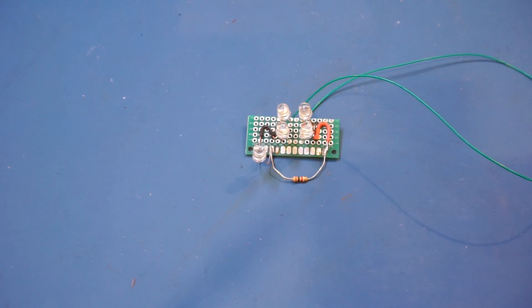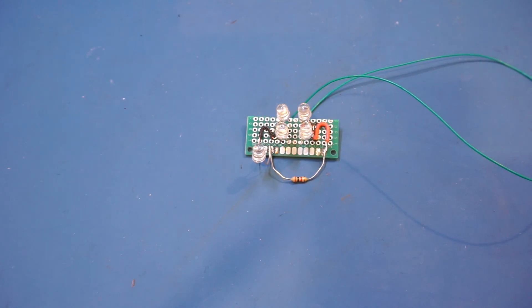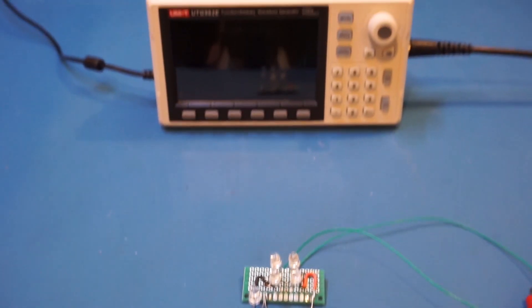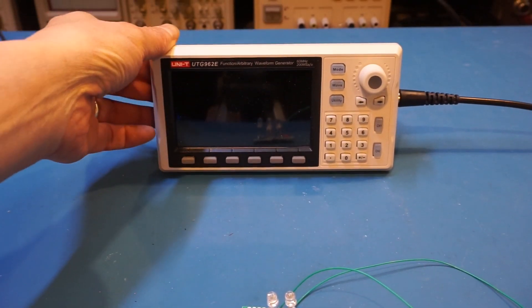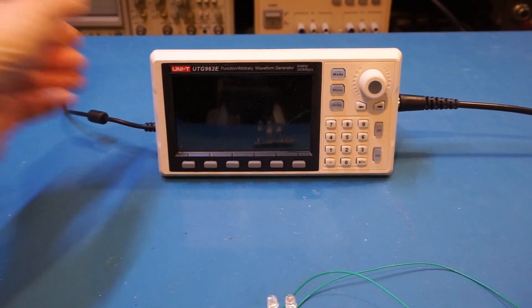Because our power line cycles are at 60 Hz, which is too fast for our eyes to see the switching, I'm going to use a signal generator to generate a 1 Hz sinusoidal wave so that we can clearly see what is going on.